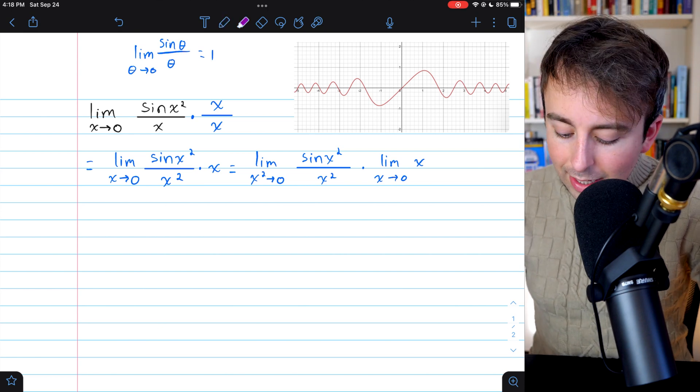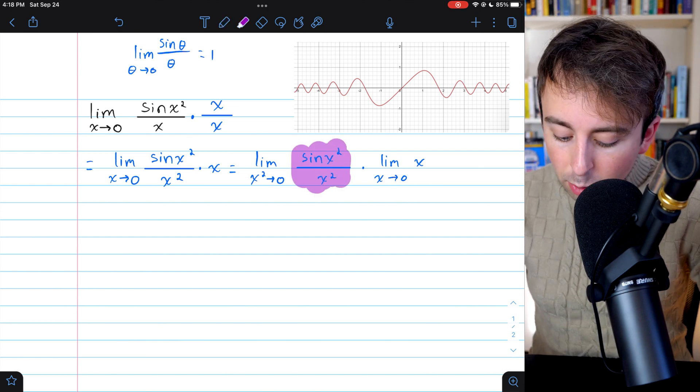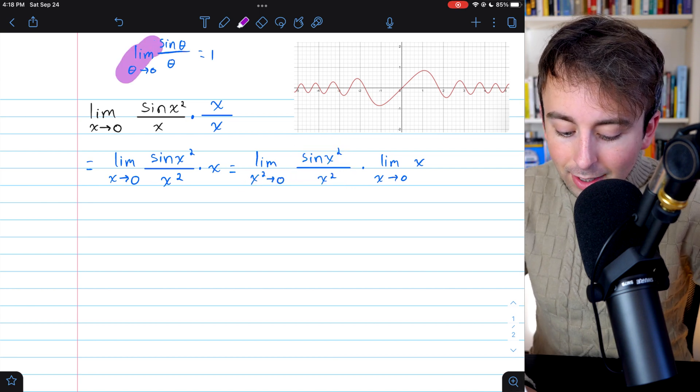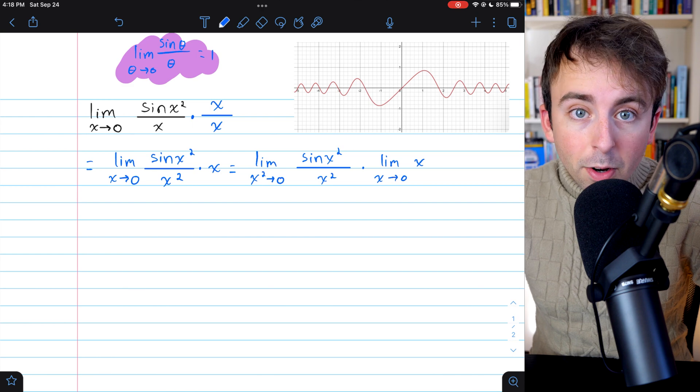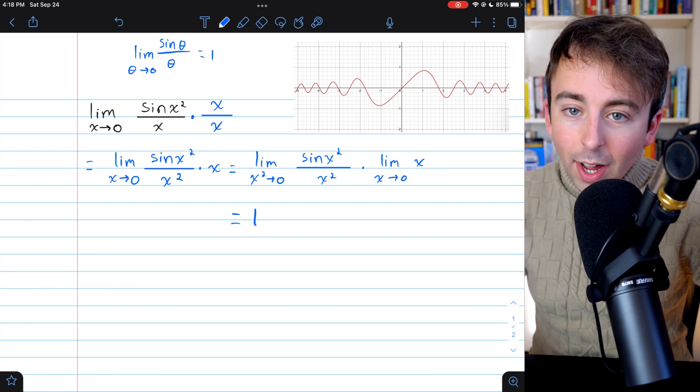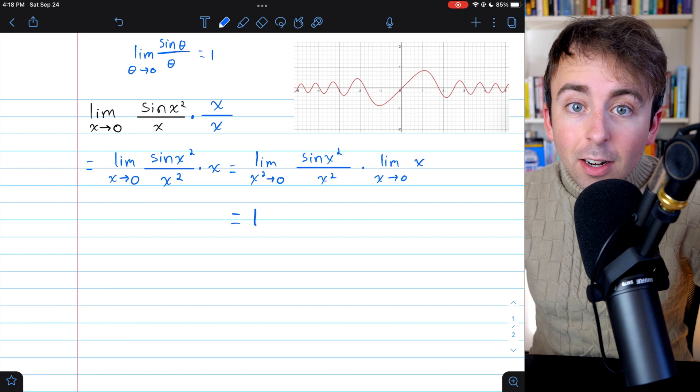I know that the limit of sine x squared over x squared with x squared approaching zero, well, that's the same as this classic limit. Sine of a thing over a thing with the thing approaching zero, that equals one. Link in the description to my lesson proving that.